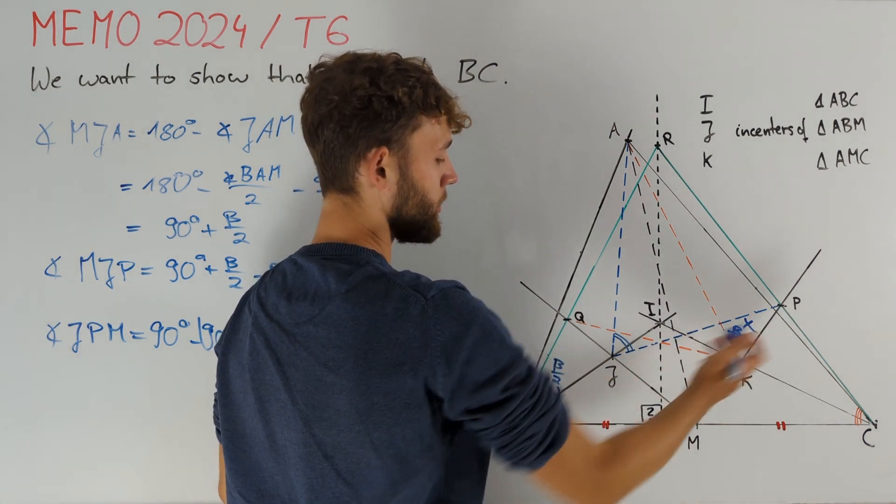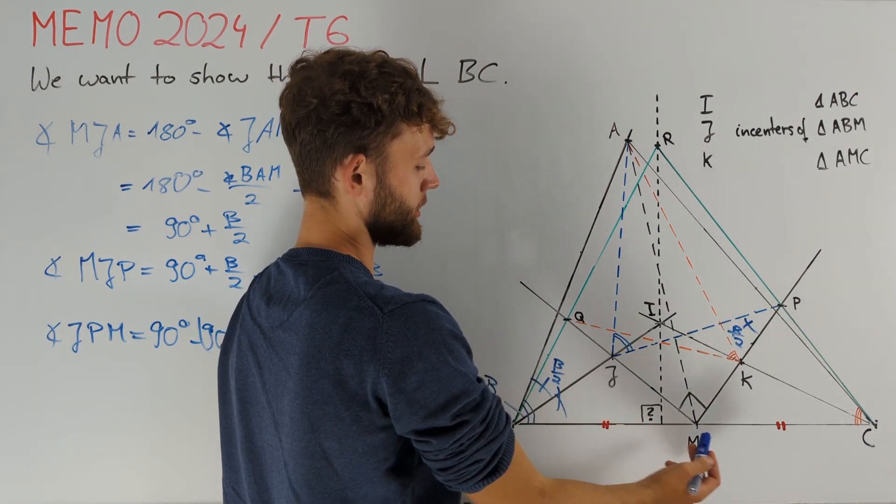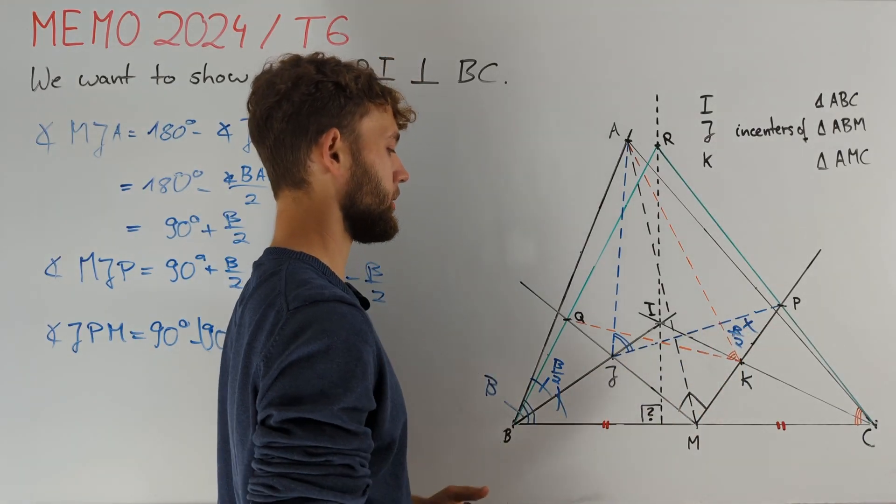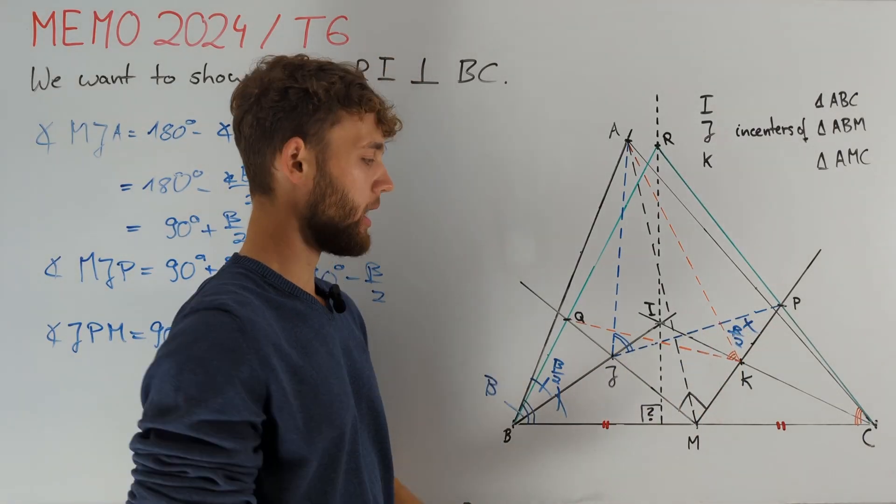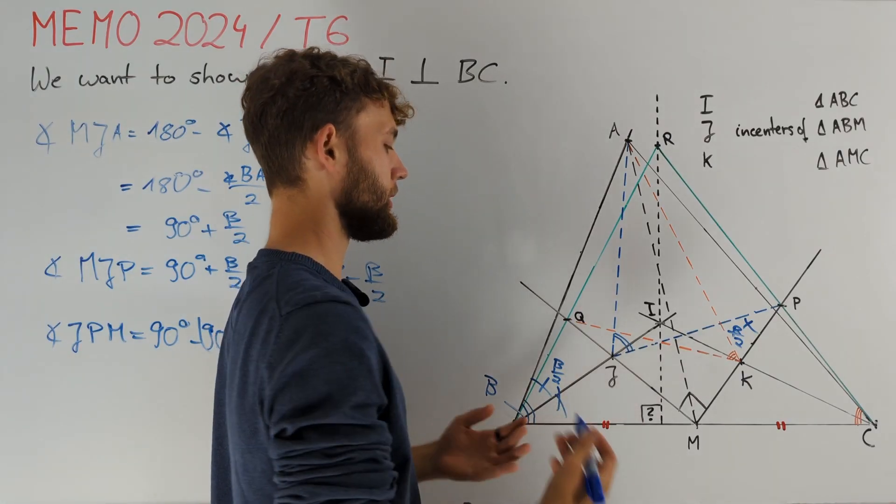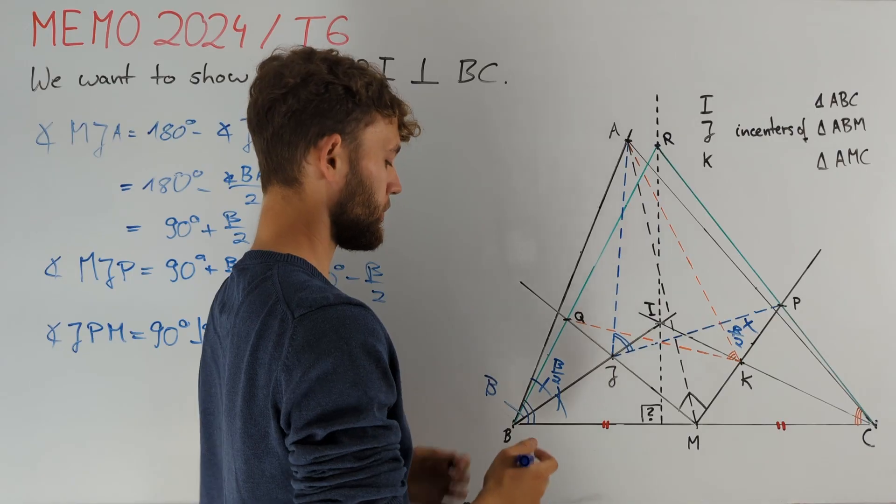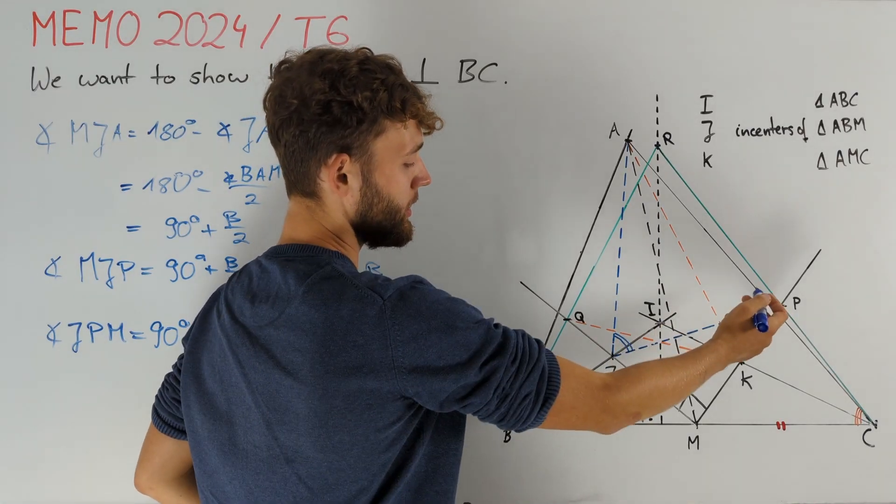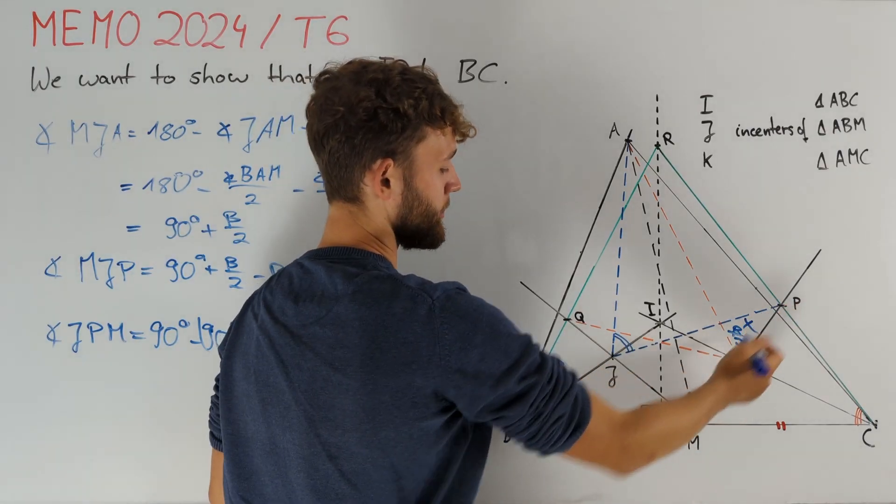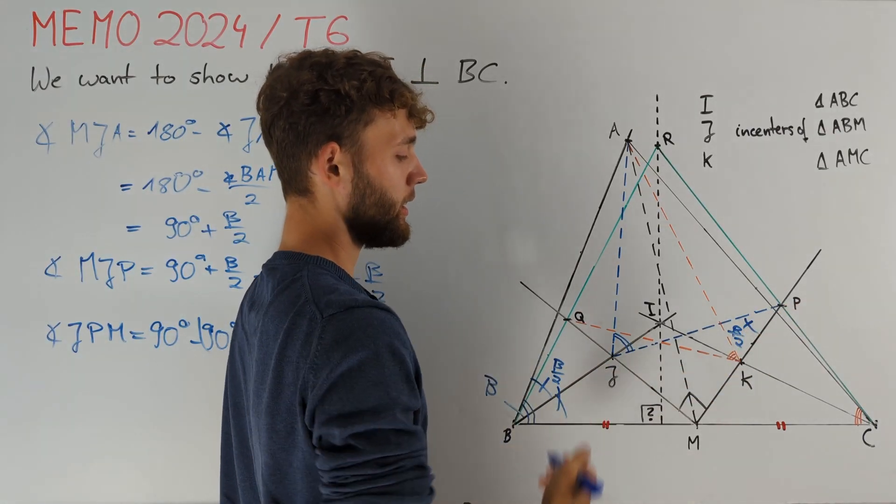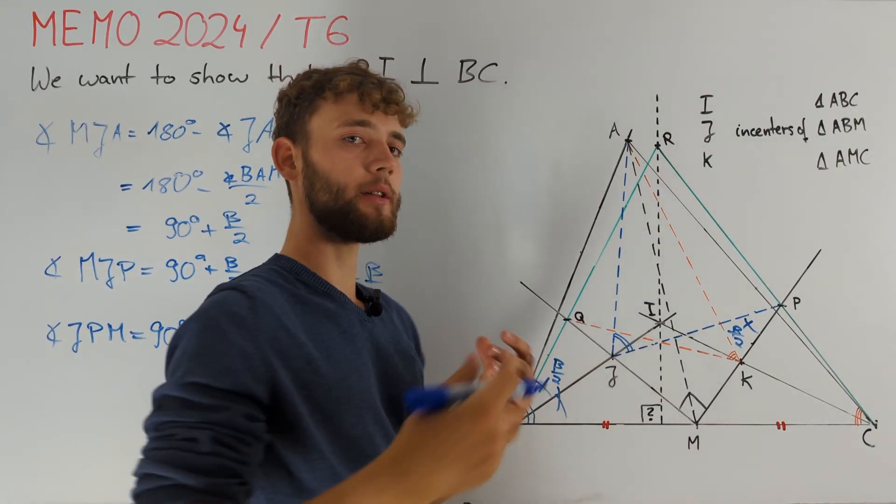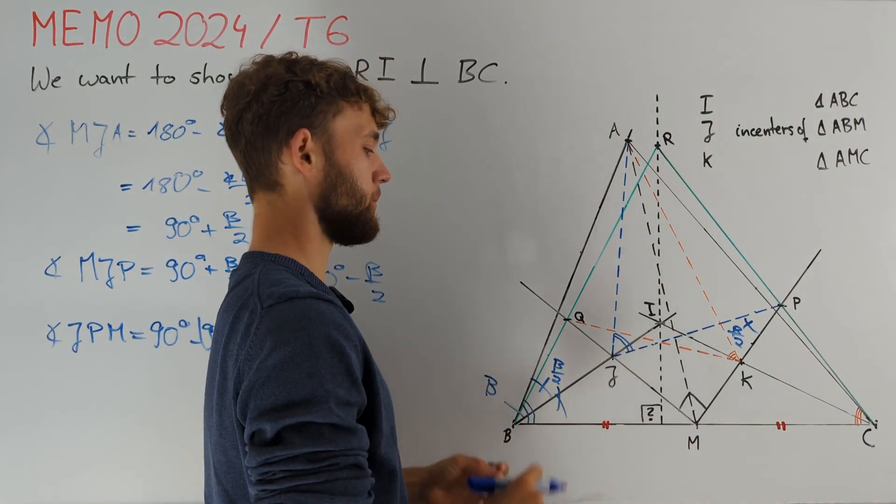If B and P would lie on the same side of this segment JM, then this angle equality would tell us that these four points would lie on a circle. However, we can clearly see that this is not the case here. This motivates us to reflect one of the points B or P about line JM. Since we already know that the angle PMJ is orthogonal, it would be really nice to reflect P over line MJ because this is nothing but the reflection of P at M.